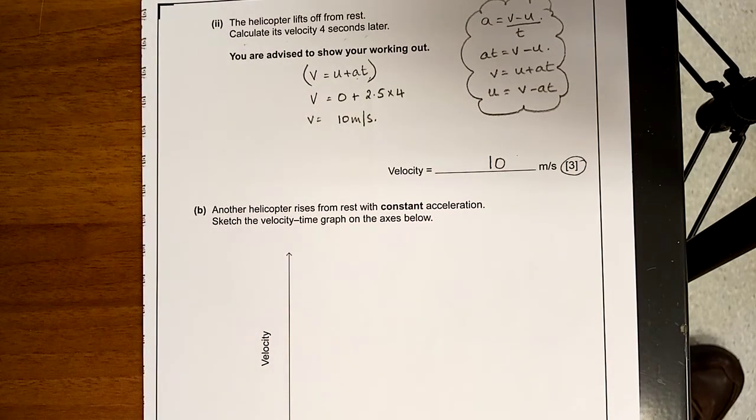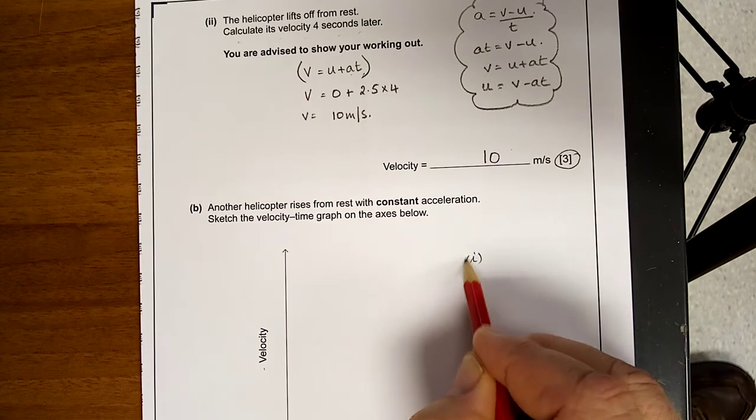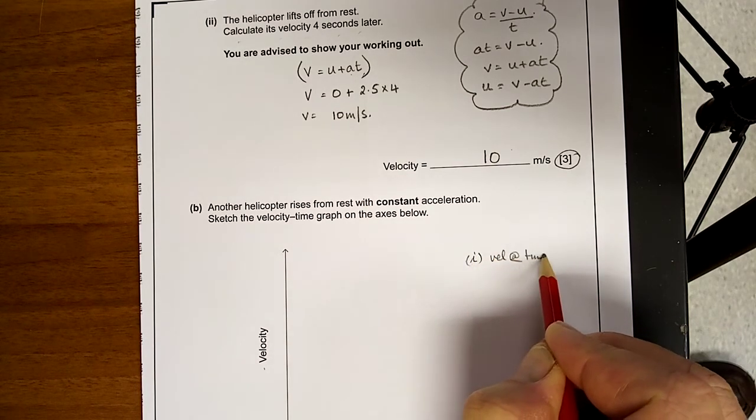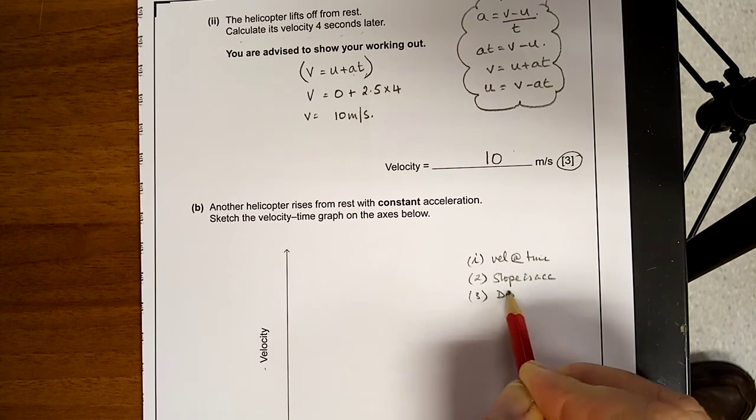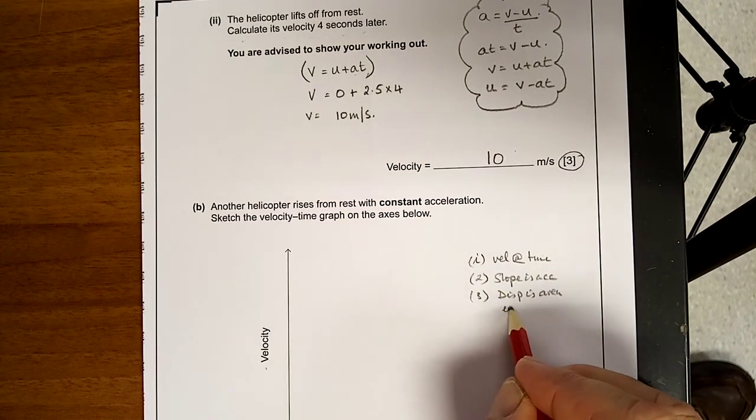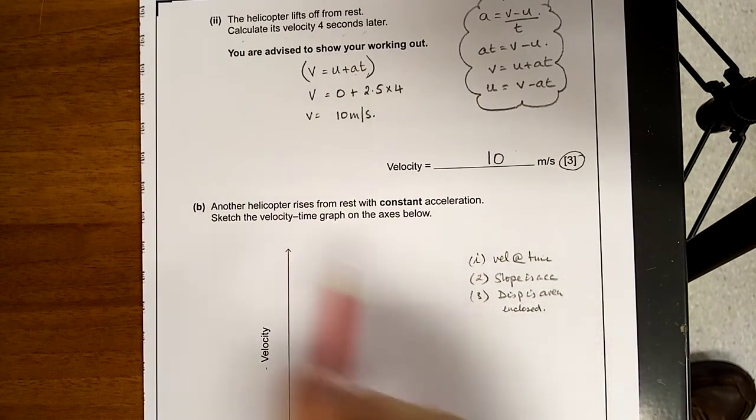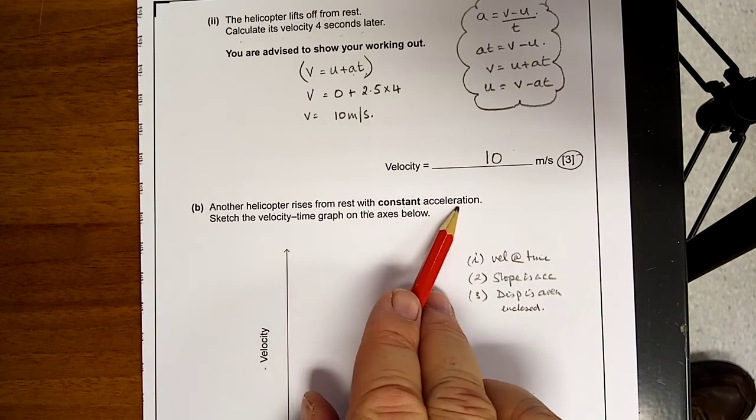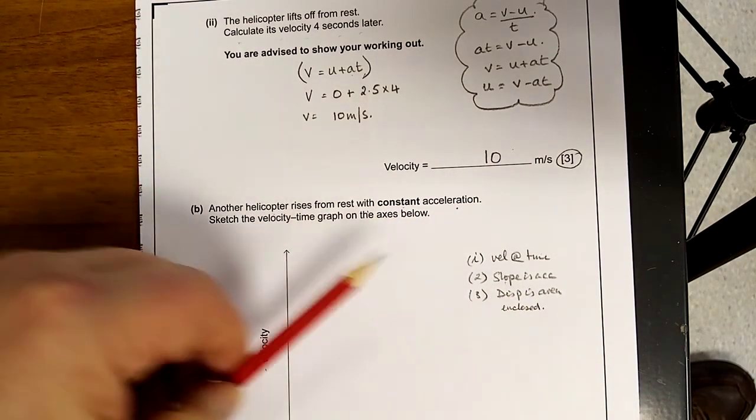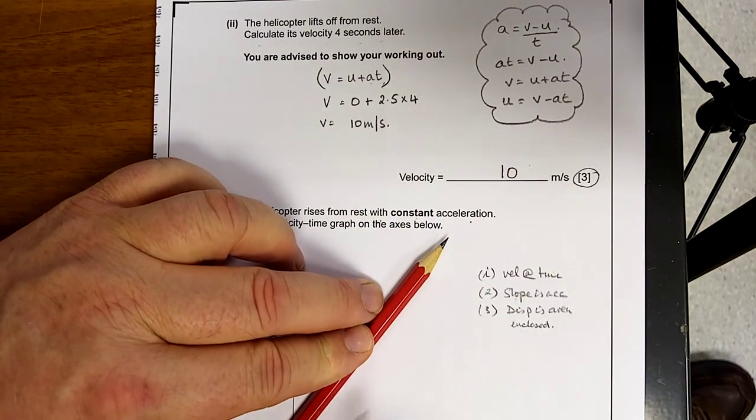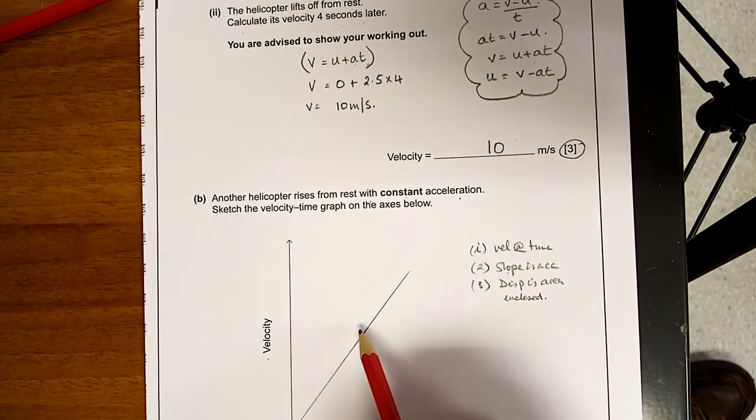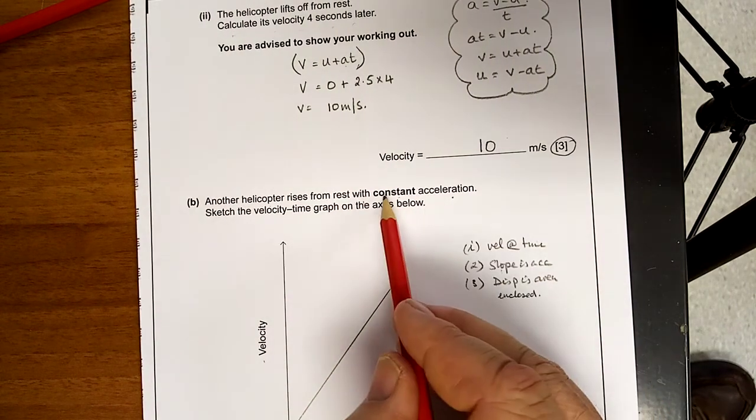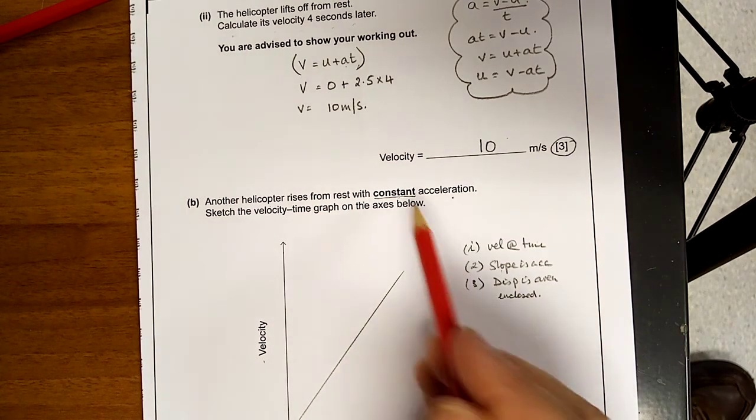Another helicopter rises from rest with a constant acceleration. Sketch the velocity time graph from the axis below. It's a velocity time graph. And I told you, velocity time graph: one, velocity at a time; two, slope is acceleration; and three, displacement is area enclosed. Right? Another helicopter rises from rest with a constant acceleration. So, it's got a constant slope. Should've had a ruler there. You make sure you've a ruler. Anyhow, there's got a constant slope, so, therefore, it's got a constant acceleration.